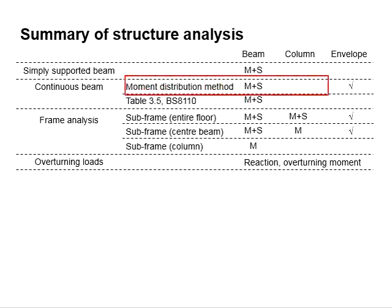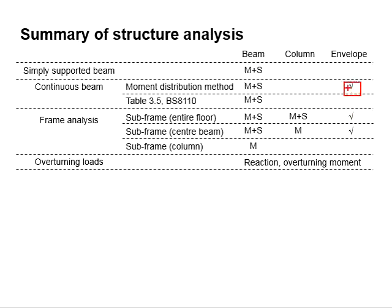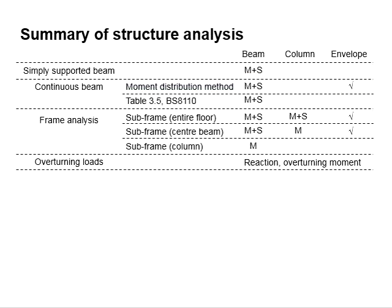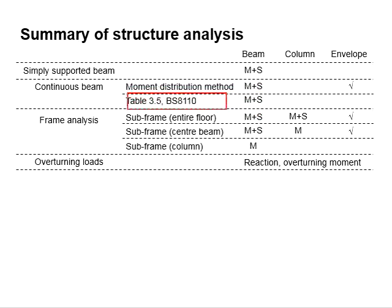There will be two sets of load conditions that you need to apply. For the continuous beam, you analyze different combinations of the maximum and minimum loads, develop shear force and bending moment diagrams for each load combination, then merge the diagrams to obtain the envelope shear force and bending moment diagrams. This calculation step is rather lengthy and tedious. Alternatively, you may refer to Table 3.5 of BS8110 for a simplified method, which is normally slightly more conservative.